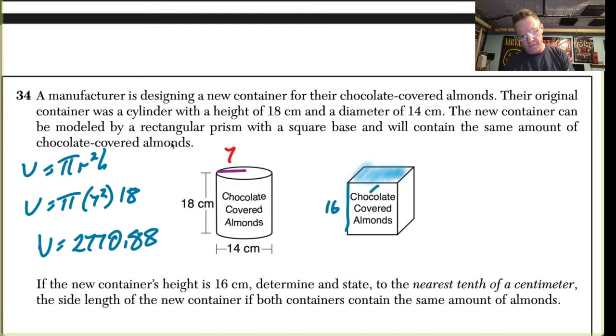So the lengths of the sides are x and x. Remember the volume of a prism is the area of the base times the height. What's the area of this base? x squared. So the volume of this thing is going to be x squared times the height of 16. You could even rewrite that as 16 x squared.